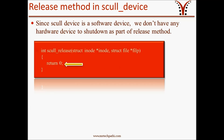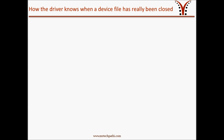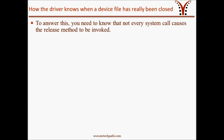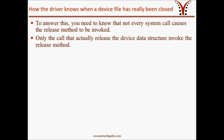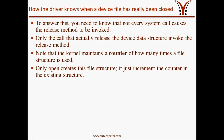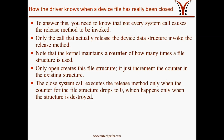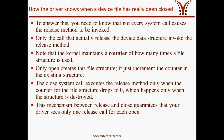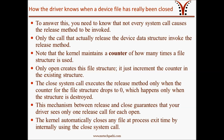If you see in this implementation, we are just returning 0. Have you ever wondered how the device driver knows when the device file has really been closed? Not every system call causes the release method to be invoked. Only the call that actually releases the device driver structure invokes the release method. Note that the kernel maintains a counter of how many times a file structure is used. Only open creates this file structure; a fork or dup just increments the counter in the existing structure. The close system call executes the release method only when the counter for the file structure drops to 0, which happens only when the structure is destroyed. This mechanism between release and close guarantees that your driver sees only one release call for each open. One important point to note here is that the kernel automatically closes any file at process exit time by internally using the close system call.